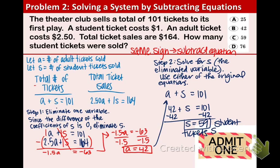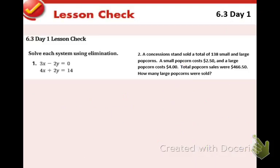That is option C. When we have a multiple choice problem, make sure you actually show your work — I will not give you credit if you just circle C. That completes today's lesson. Please make sure that you did the 6.2 lesson check, and feel free to try the 6.3 day one lesson check. I'll see you tomorrow.